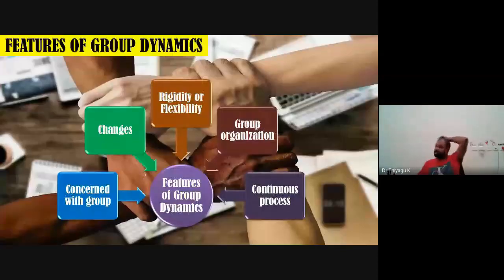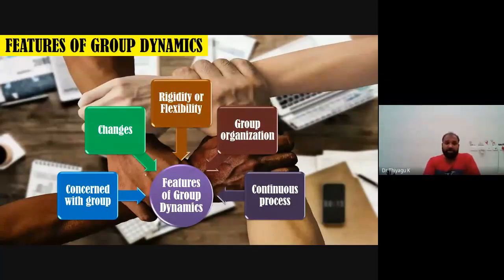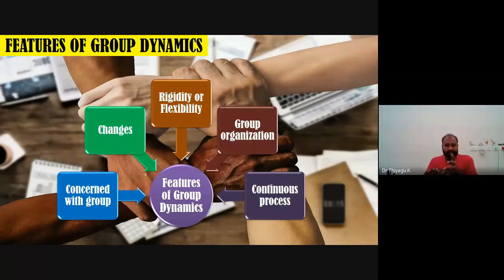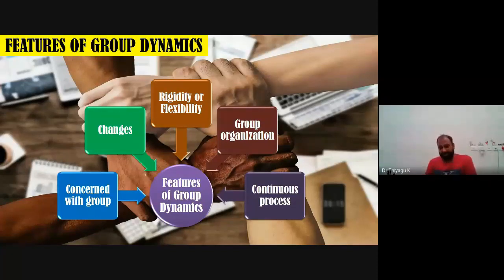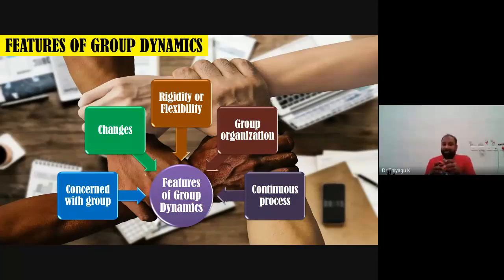The features of group dynamics have five aspects. The first feature is concern with the group. We have to discuss with group members before doing anything — otherwise ego may arise. As a leader or subordinate, you should ask the head's permission and mingle with subordinates before implementation. Wherever a group exists, individuals interact and members are continually changing or adjusting relationships with respect to each other.